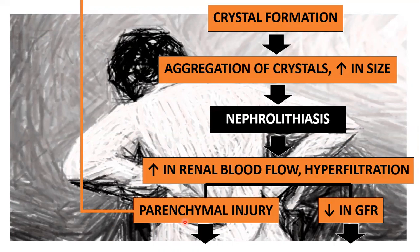Chronic acid use would also contribute to this parenchymal damage, and it would also lead to a decrease in the glomerular filtration rate.